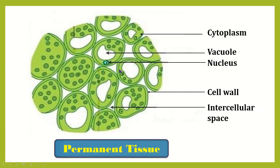This is the picture of permanent tissue. Here, a large vacuole is present and thin cytoplasm with a small nucleus is present. The cell wall is comparatively thick.